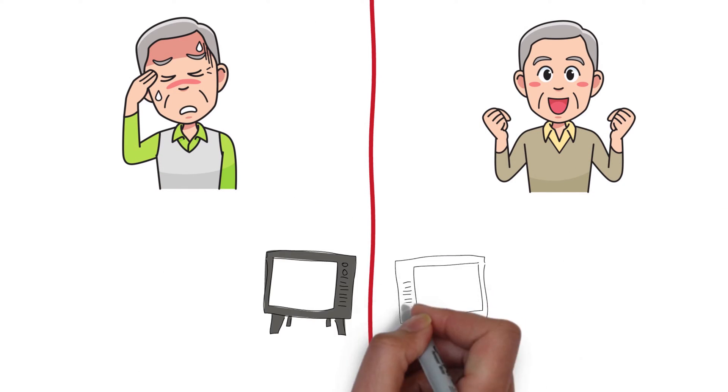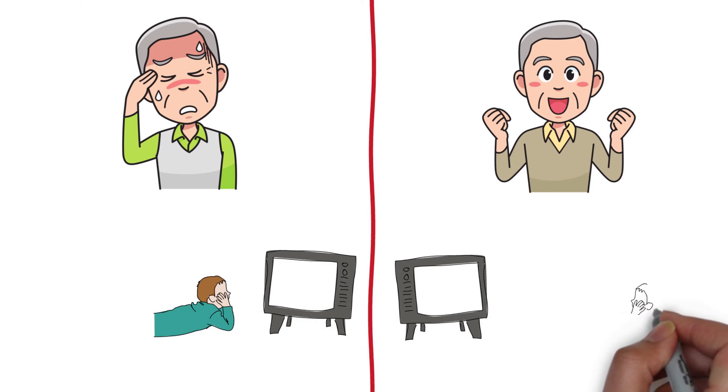If your child sits at the front of the classroom or moves very close to the screen, he or she probably has myopia.